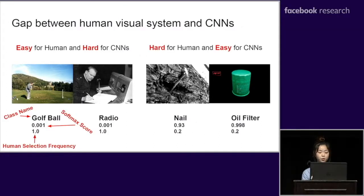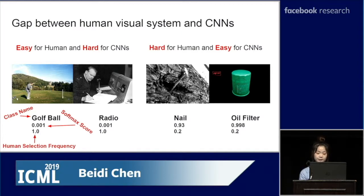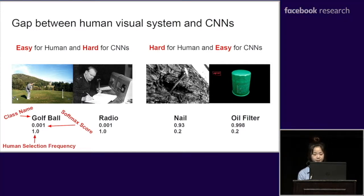Let's start from some motivating examples to discuss the gap between human visual perception and CNN. From the left side images, we can observe images that are easy for humans to recognize but hard for CNNs. These images have relatively rich context, but the salient part is still the object of interest. Right hand side images are hard to recognize for humans but easy for CNNs — these images have more textures and less objects. The goal of our research is to cognitively measure human visual hardness and bridge the gap between the human visual system and CNNs.